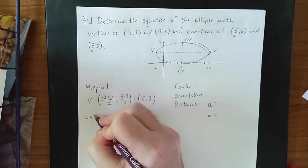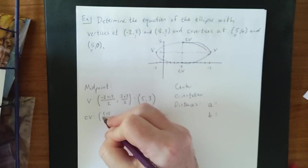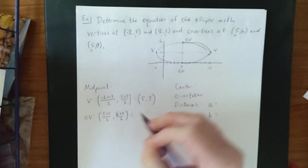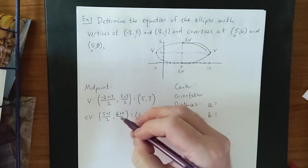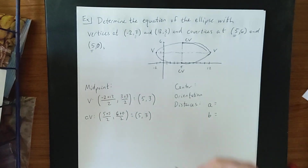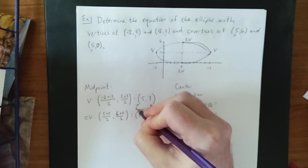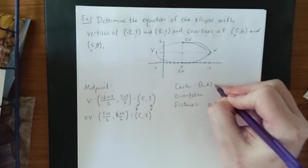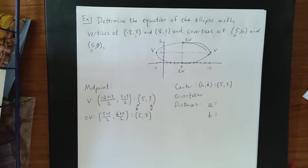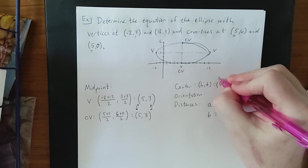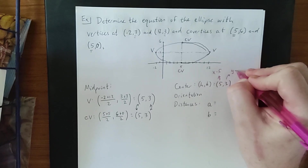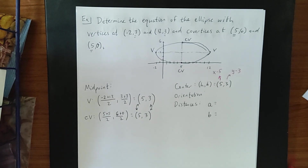If we use the co-vertices instead and find their midpoint, we take the average of x-coordinates 5 and 5, which is 5, and the average of y-coordinates 6 and 0, which is 6 over 2 = 3. Both methods confirm the center, referred to as (h, k), is the ordered pair 5, 3. This means the equation will contain an x minus 5 and a y minus 3.